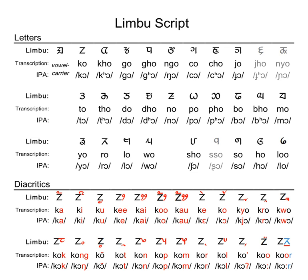Three additional letters were used in early versions of the modern script. Two ligatures were used for Nepali consonant conjuncts: Janya for Devanagari Janya, and one for Devanagari Tra. 19th-century texts used a small Anusvara to mark nasalization, used interchangeably with another sign.